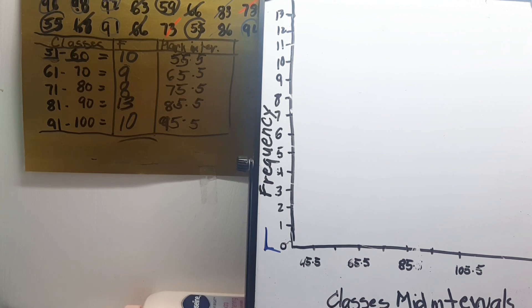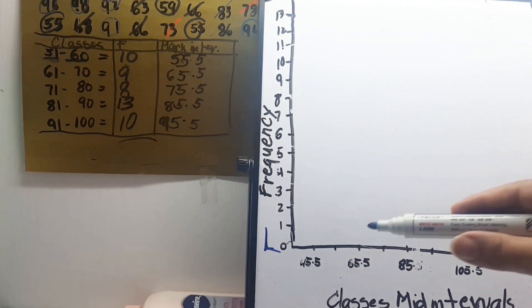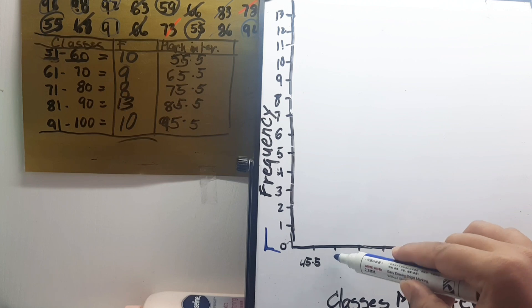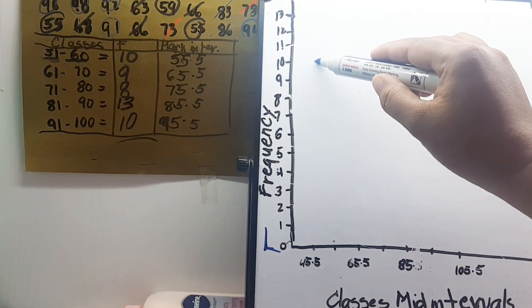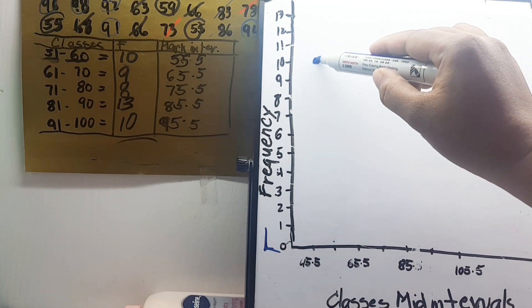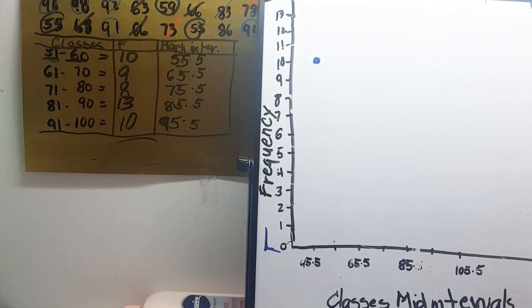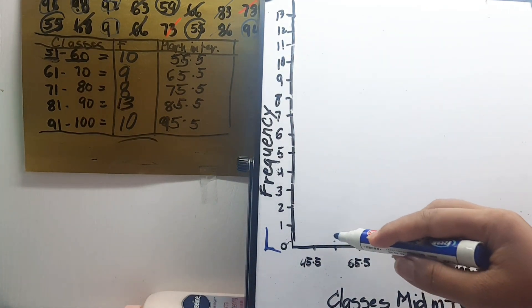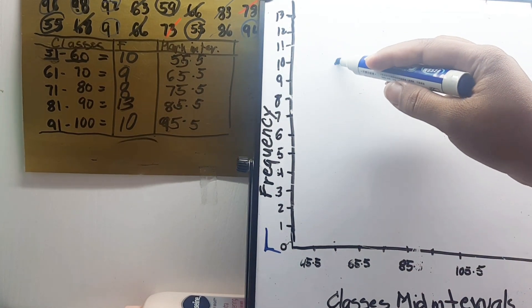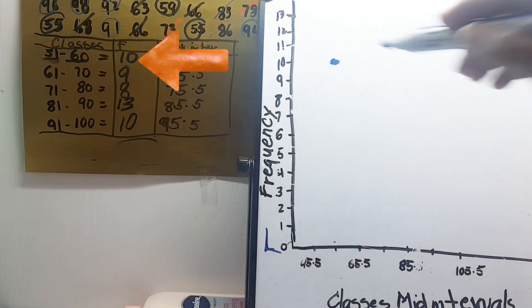So let's graph. Class mid interval 55.5 has a frequency of 10. So this is our 55.5 with frequency 10. We need to align, sorry I'm not good at aligning, okay here. Let's imagine that's here.